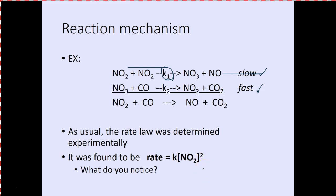Think about the molecularity we just talked about. There are two elementary steps: NO2 + NO2 → NO3 + NO, and NO3 + CO → NO2 + CO2. The two above the line are the elementary steps; the one below the line is the complete reaction. What do you notice about the rate law and the molecularity of these elementary steps?